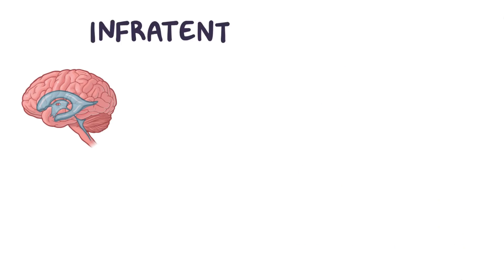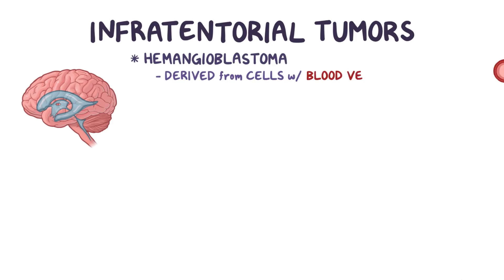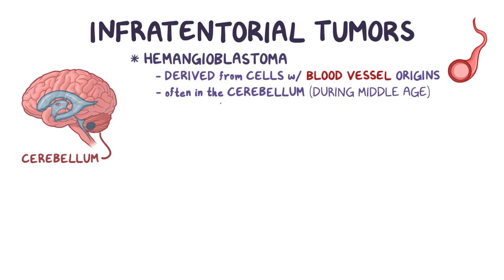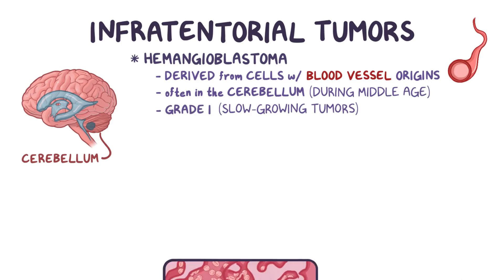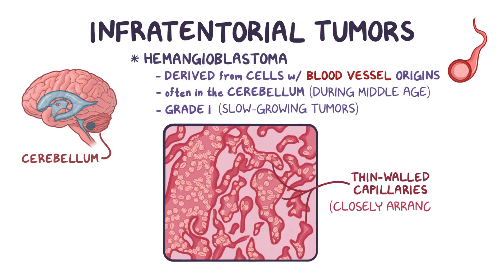Now let's focus on one of the infratentorial adult tumors — a hemangioblastoma. These tumors derive from cells with blood vessel origins, and while they can develop anywhere in the brain, they're most often found in the cerebellum, especially in a middle-aged person. They are slow-growing tumors and are typically grade 1. Histologically, there are often thin-walled capillaries arranged close to one another.